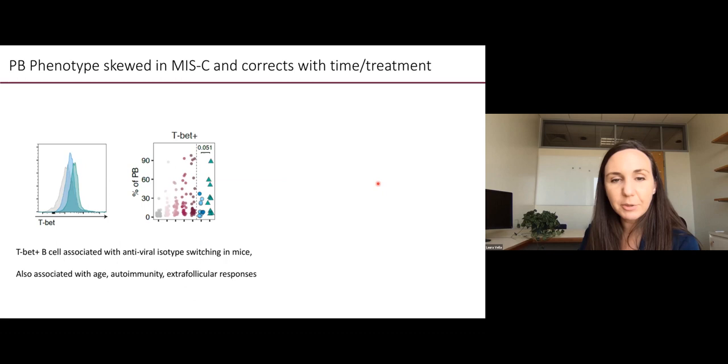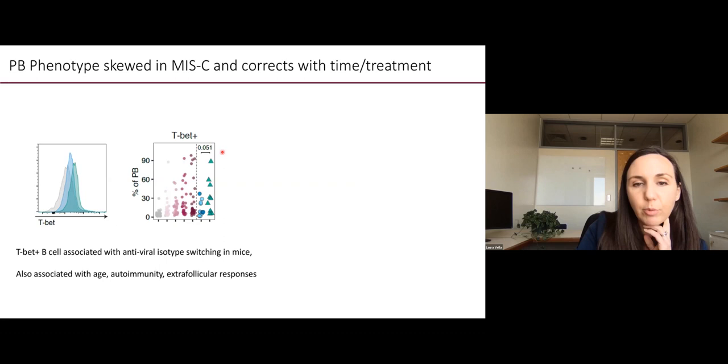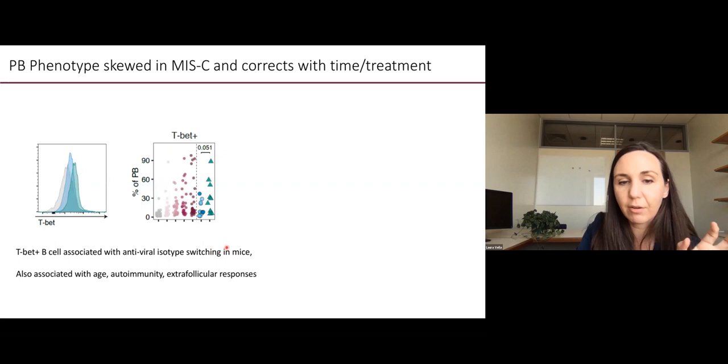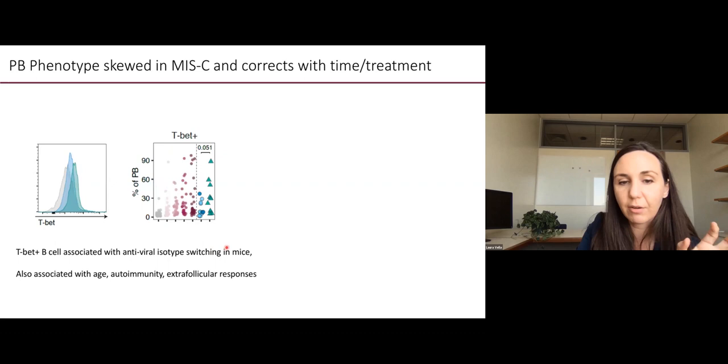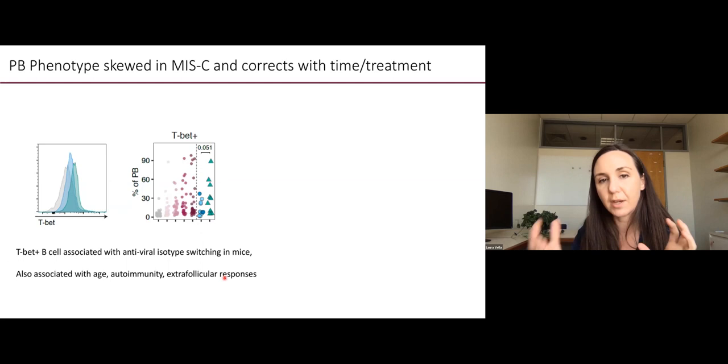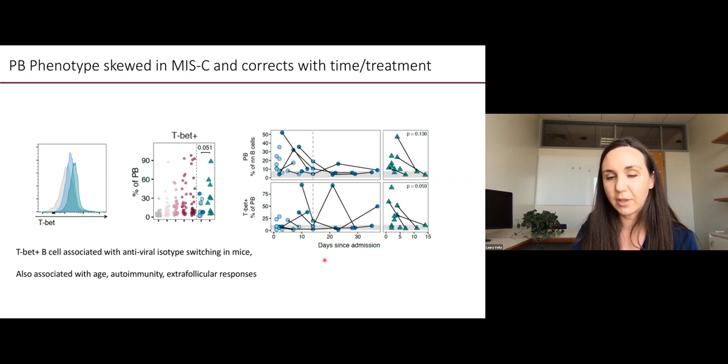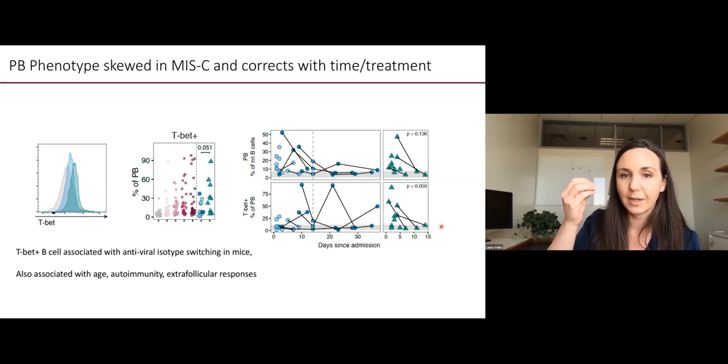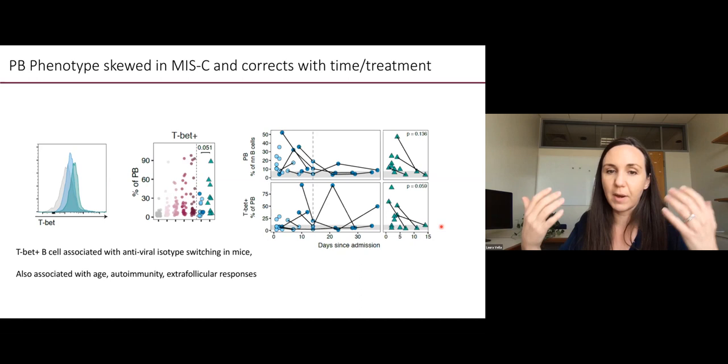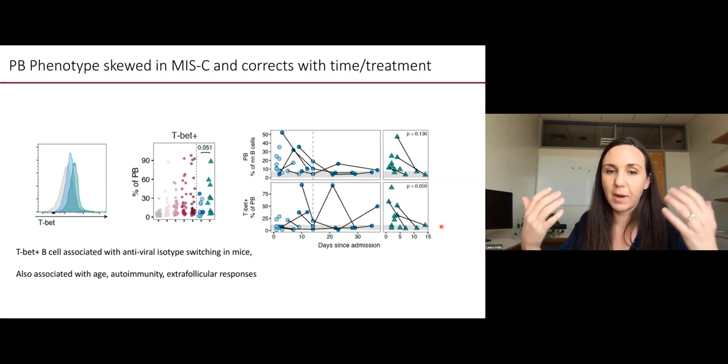When we look at these plasma blasts, which are abnormally or persistently elevated in MIS-C, we can see that a higher proportion of them are expressing T-bet, which can be associated with antiviral isotype switching, but is also associated with age, autoimmunity, and some disorganized or extrafollicular B cell responses. Interestingly though, if you think about the adult data and how adults progress over time in the hospital, what we did see is that in MIS-C, if we plot T-bet frequencies and plasma blast frequencies from days since admission, once we treat these children, their plasma blast numbers return to normal as indicated in the gray bar and the frequency of their plasma blast that express T-bet return to normal. So whatever is triggering this exuberant response, phenotypically in the blood, that response is abated by our immunomodulatory therapies.